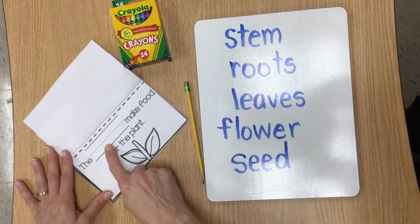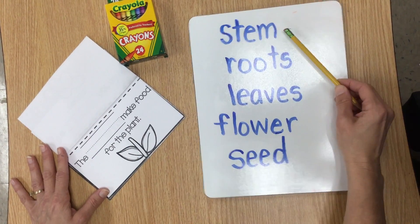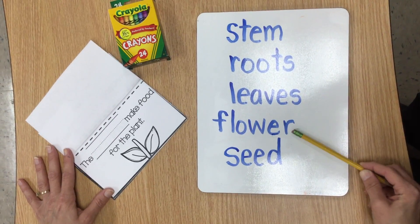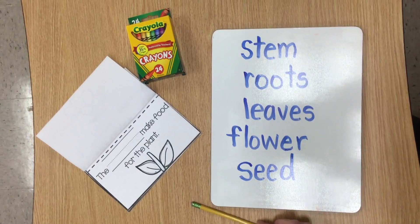It says the blank makes food for the plant. And here's our picture. So decide if that would be stem, roots, leaves, flower, or seed. Go ahead and pause the video while you finish this page.